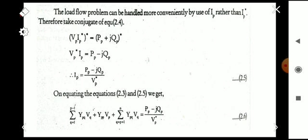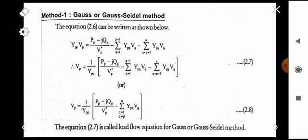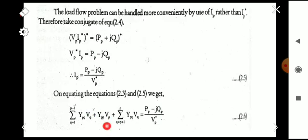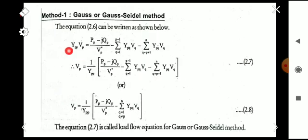From this basic equation we discuss two different methods for load flow analysis. The first is the Gauss-Seidel method. For this method, we keep the Ypp·Vp term on the left side and move all other terms to the right-hand side. Rearranging, we get: Ypp·Vp = (Pp − jQp)/Vp* − sigma of other Ypq·Vq terms.